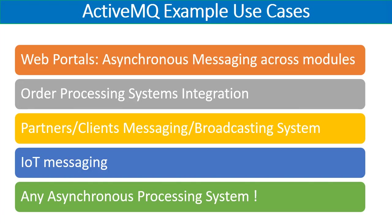Basically, the core takeaway is that for any asynchronous processing system you want to implement, you can use Apache ActiveMQ. Whenever you have a requirement for an asynchronous communication model, the first thing that should come to mind is that you need a message broker. The second decision is whether you want open source or proprietary — and for open source, Apache ActiveMQ is going to be one of the major players you take into consideration.